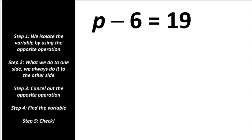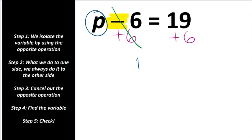Let's do another example. Our equation is p minus 6 equals 19. We are subtracting here, so the opposite of subtraction is addition — we're going to add 6. What we do to one side, we must do to the other side. Minus 6 plus 6 is 0, so cross it off. We're left with p equals 19 plus 6, which is 25.